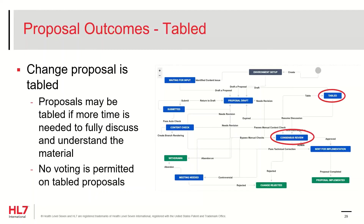As an intermediary workflow state, you're able to table the proposal because the current solution is unclear and more time is needed to fully discuss and understand the material. Tabling a proposal will pause the voting process. To table a proposal, select the Workflow button and click Table. Tabling may be helpful if you want to pause voting until certain people have gotten a chance to take a look at the proposal before automatic vote tallying triggers a transition, or if you'd like to first discuss the proposal in an upcoming meeting.